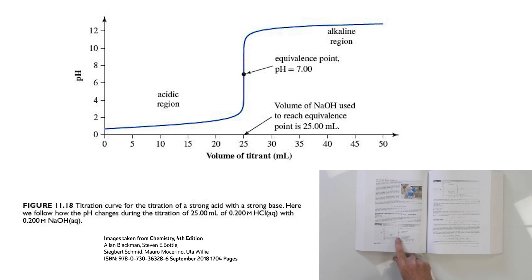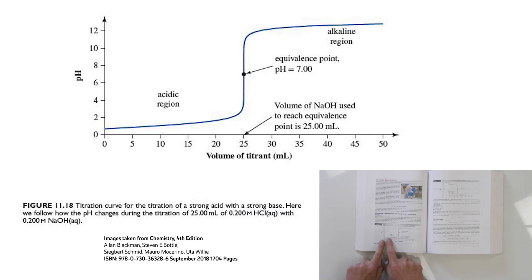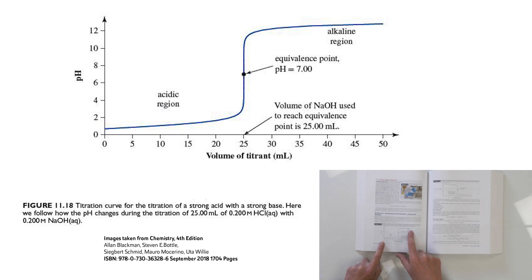When you're doing a strong acid/strong base titration, you'll always find that the equivalence point has a pH of exactly 7. The reason for that is that when we've added exactly the same number of moles of sodium hydroxide as we have HCl, what we've got in our solution is simply sodium chloride, NaCl. Chloride is an extraordinarily weak base, so it doesn't do anything to the pH — giving a pH of 7. We call the region up to 25 mL the acidic region, and after the equivalence point, the alkaline or basic region.